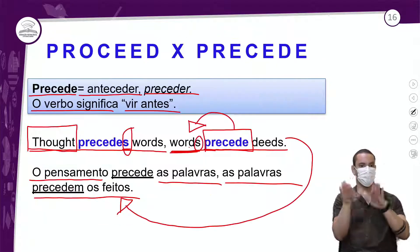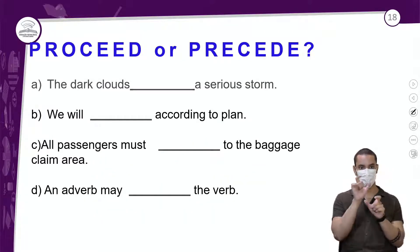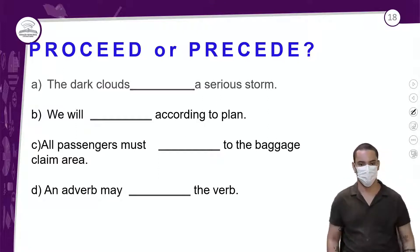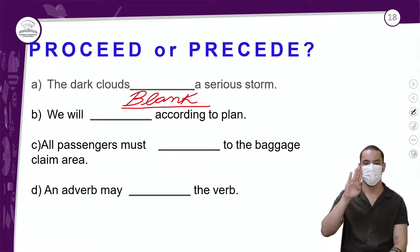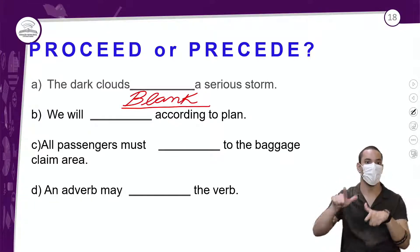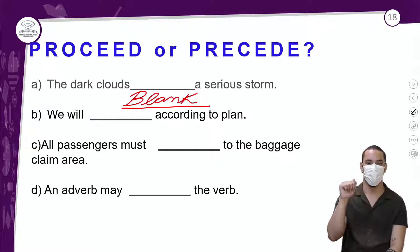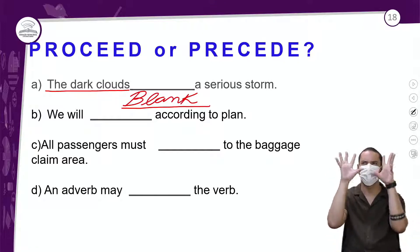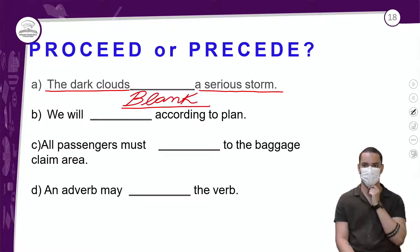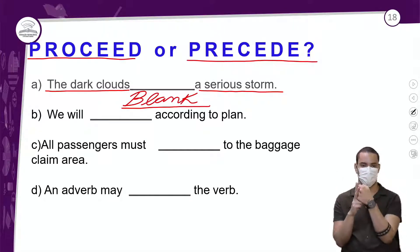Nem sempre a regra geral. Let's practice! Vamos praticar sobre essas duas palavras — 'proceed' e 'precede'. Letra A: The dark clouds ___ a severe storm — as nuvens negras ___ uma tempestade severa. Lembrando que aqui só estamos trabalhando com verbos. Na letra A trata-se de uma frase no presente. As nuvens negras precedem a tempestade — então a palavra correta é 'precede'. Não faço nada com essa palavra porque estamos falando de nuvens no plural.